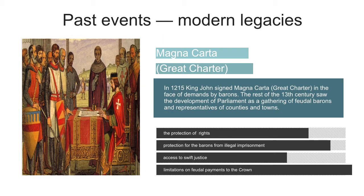By the 13th century, extortions of money by the monarchs, especially by King John, had caused widespread resentment. The nobility forced King John in 1215 to sign the document known as Magna Carta, or the Great Charter. The document secured feudal rights and established areas over which the king had no jurisdiction.